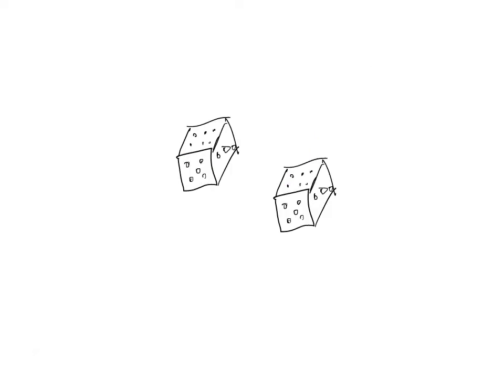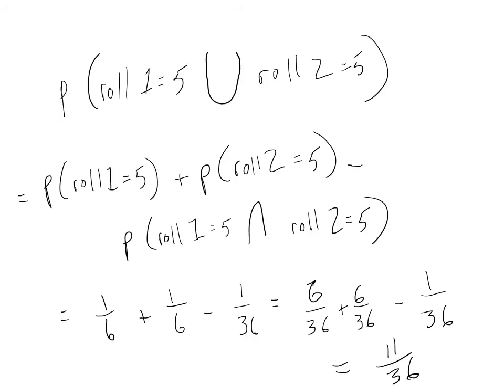So, back to rolling our dice. The probability that we roll a five either on our first roll or our second roll is equal to the probability of rolling a five on the first roll, plus the probability of rolling a five on the second roll, minus the probability of rolling a five on both rolls. That equals 1/6 plus 1/6 minus 1/36, which equals eleven over thirty-six.